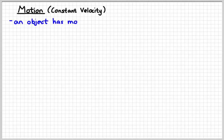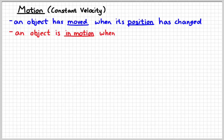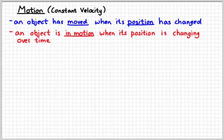Now the definition of motion is kind of a tricky one. We say that an object has moved if it has changed its position. Now that position is going to be relative to something else. But that's how we know when something has moved — if its position has changed. And so an object is in motion when its position is changing over time. The key word in the definition of motion is position: objects are moving when they're changing positions.